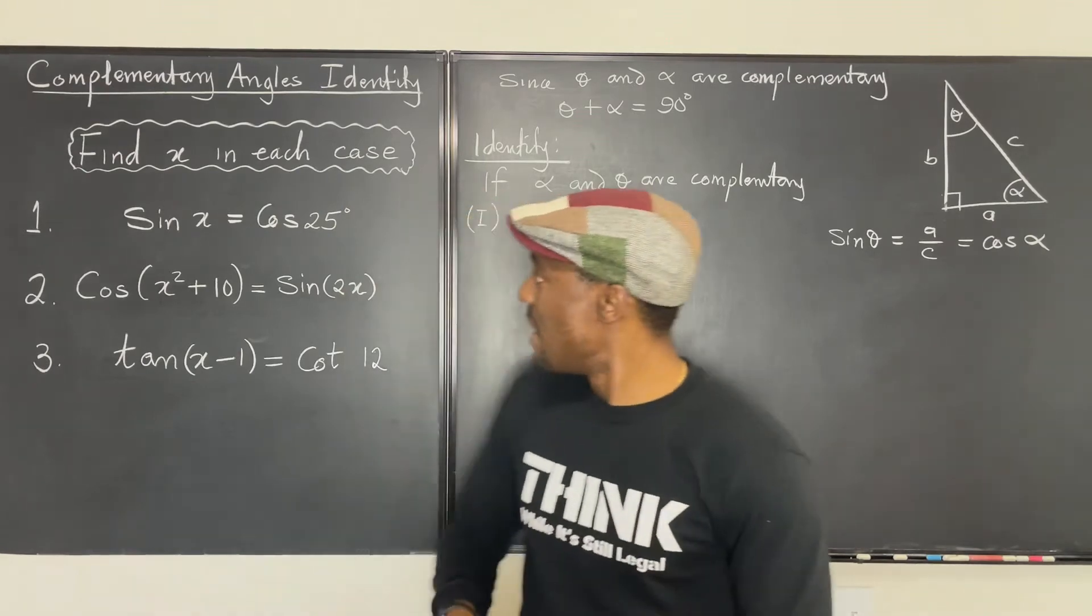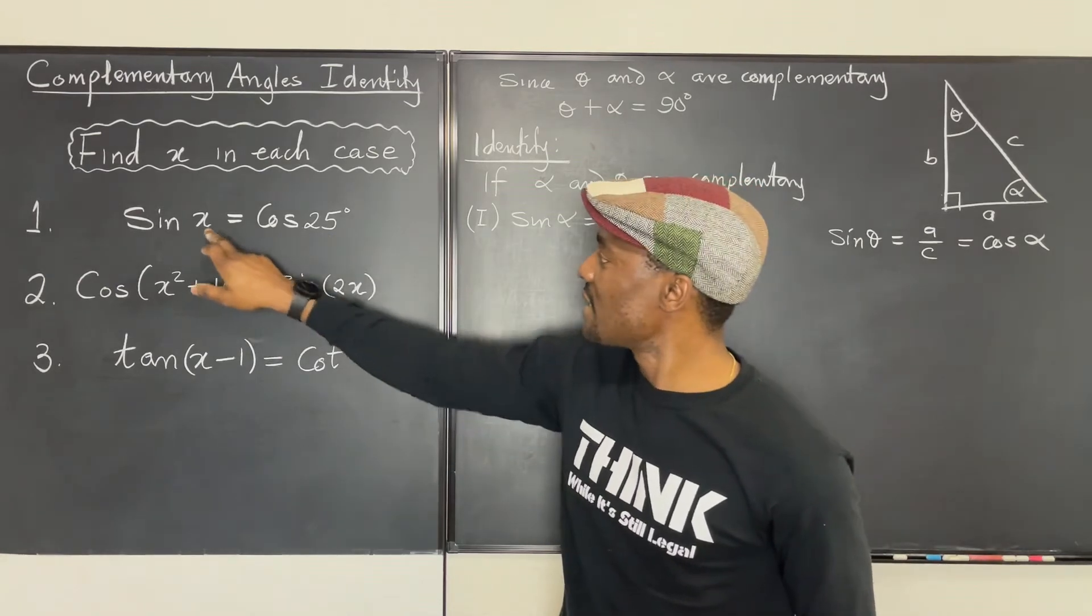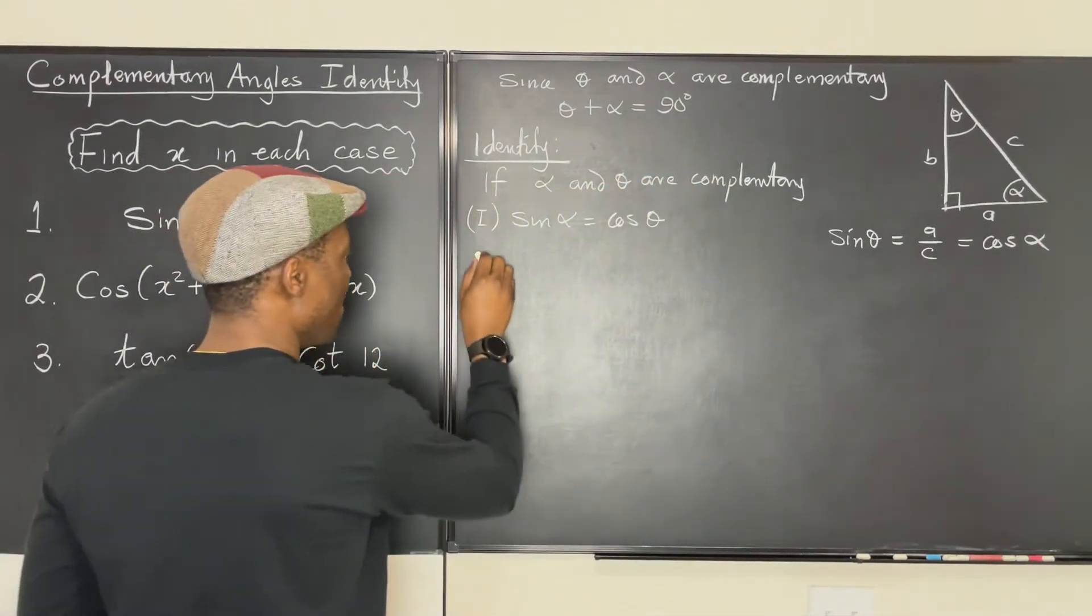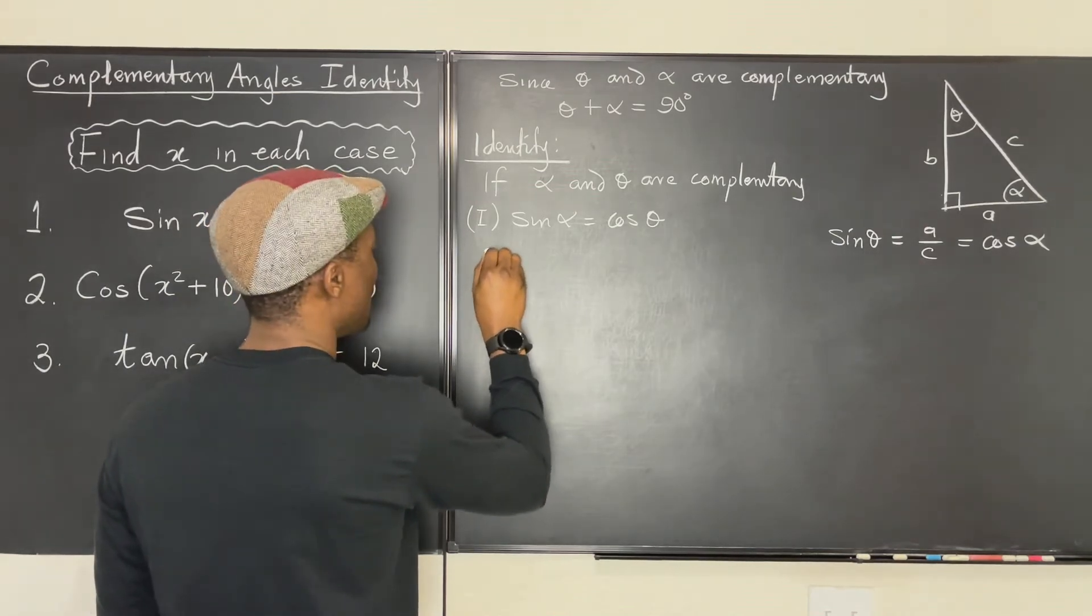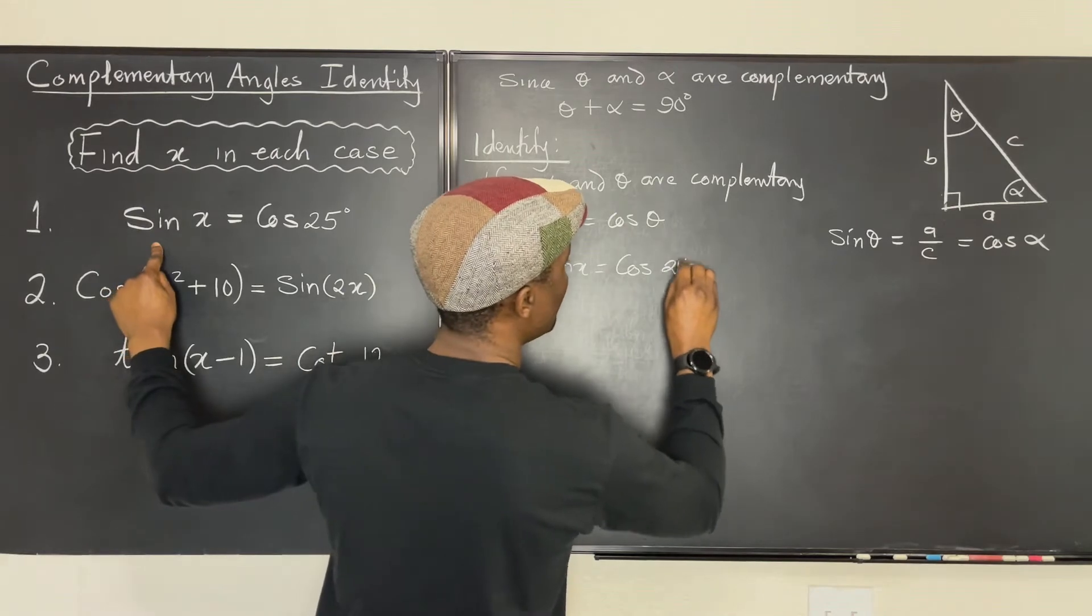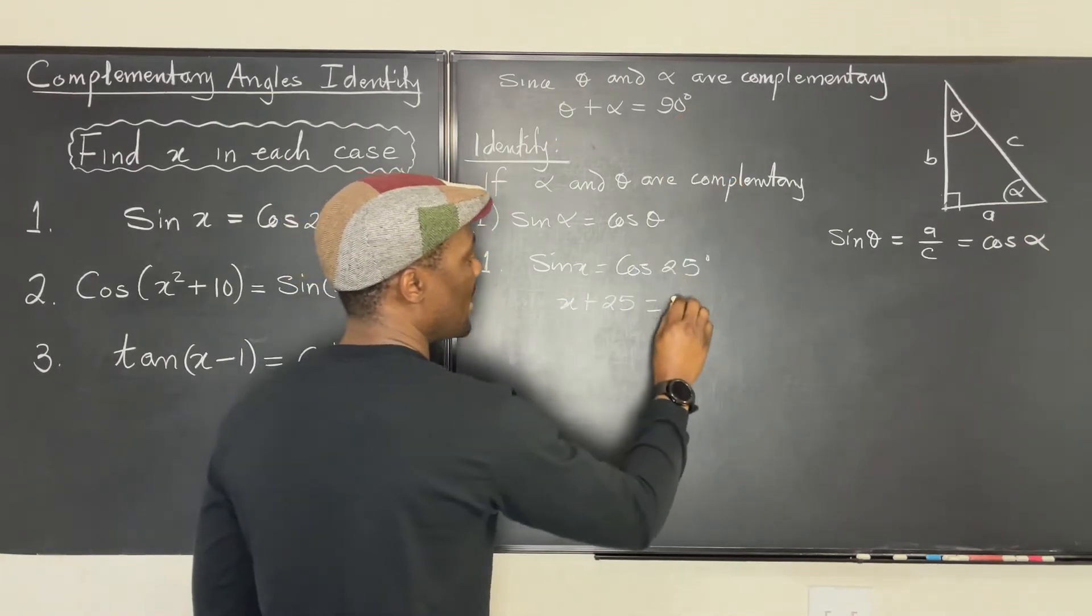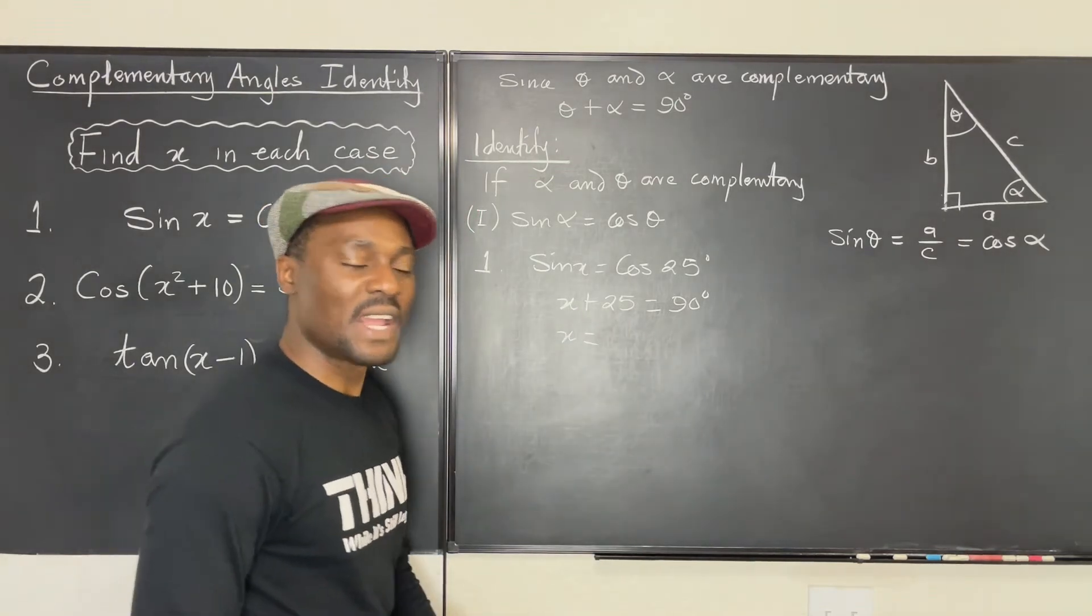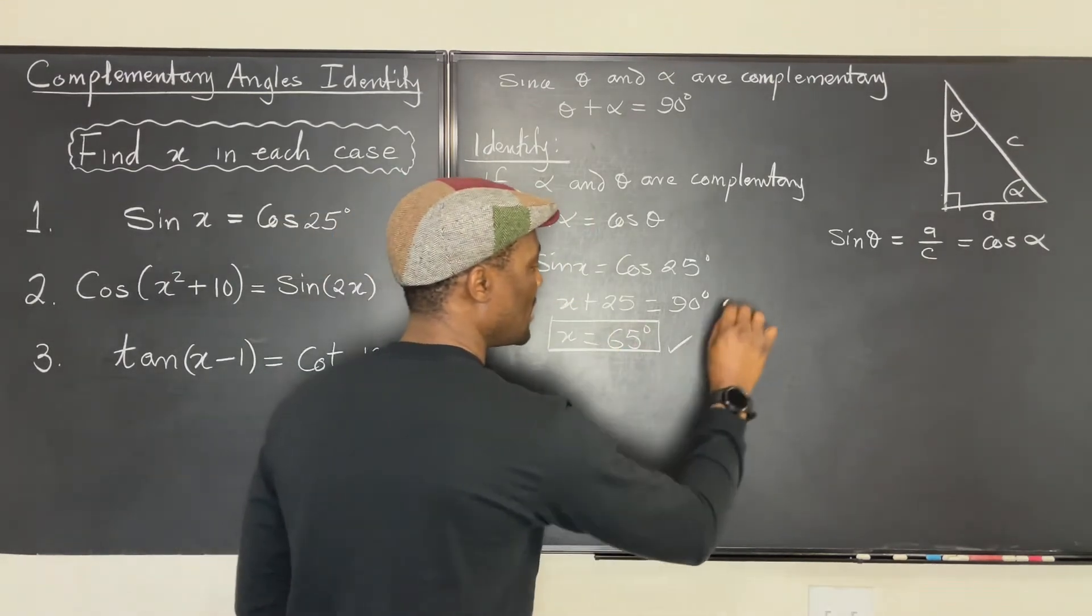That's the first identity. Sine and cosine are only equal when you perform the functions if the arguments add up to 90 degrees. So we can apply that to the very first question here. If sine x is equal to cosine 25, it simply means x and 25 are complementary angles. They complement each other to get to 90. So we can easily say for question one, sine x equals cosine 25 degrees, this simply means that x plus 25 must give you 90 degrees. So x is equal to 65.